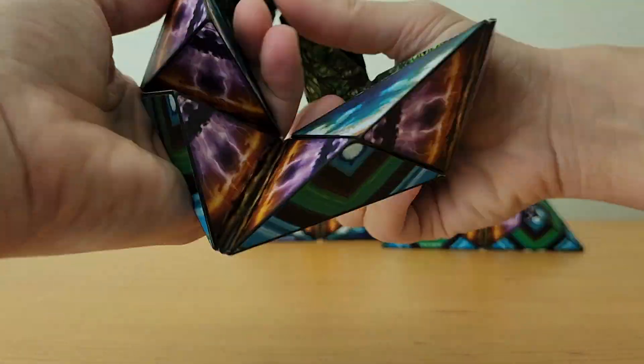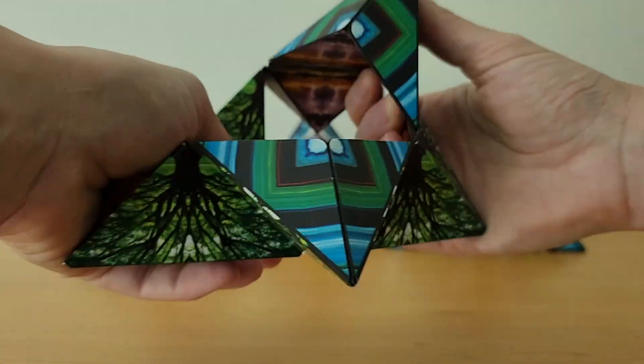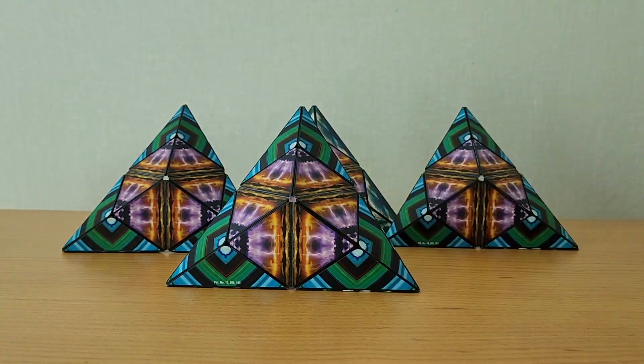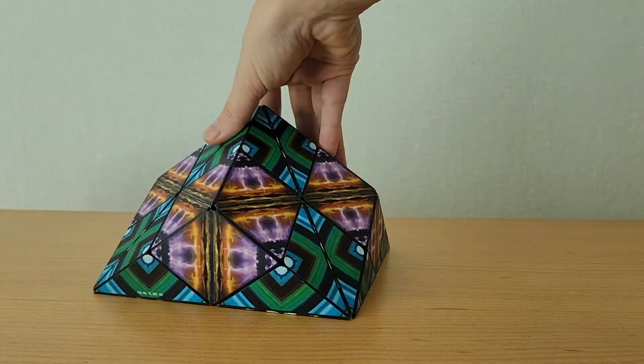This set that we have with the green is called Elements, and it's just really great. With the set of four, we're able to make all these different kinds of shapes and put them together.